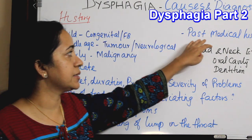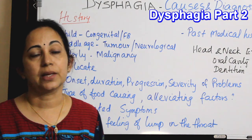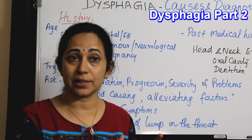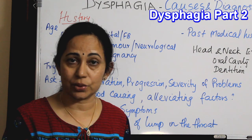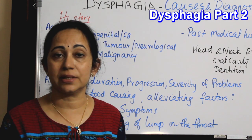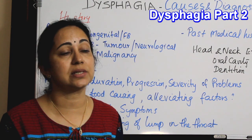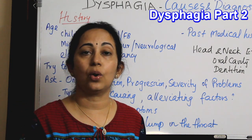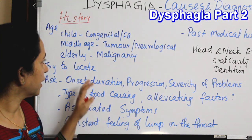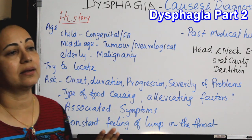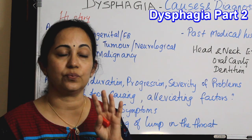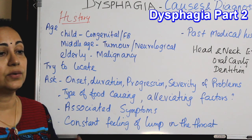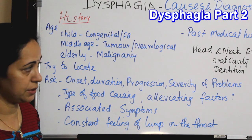Also ask the past medical history. Is the patient taking any drugs at present? There are so many drugs that can cause dysphagia. Is there any history of surgeries or any other past medical history? A thorough history taking is the most important thing in the investigation of a case of dysphagia.